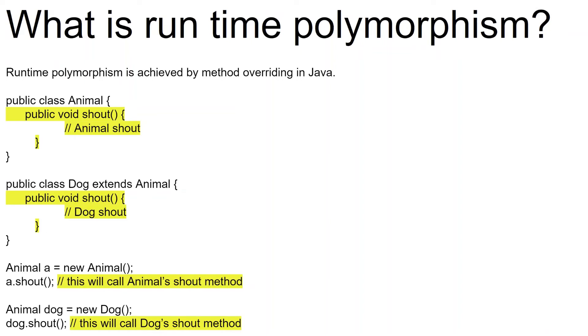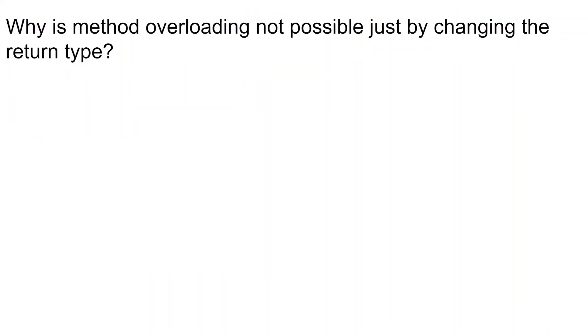Okay, I understood what it means by compile time polymorphism and runtime polymorphism. Now, can you tell me why method overloading is not possible by just changing the return type of method?